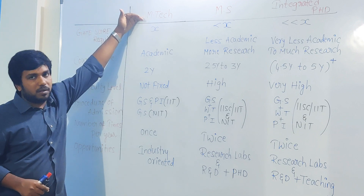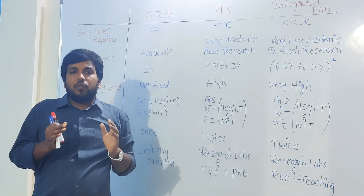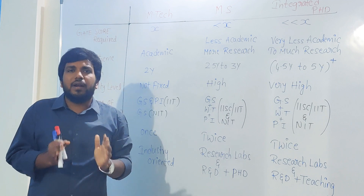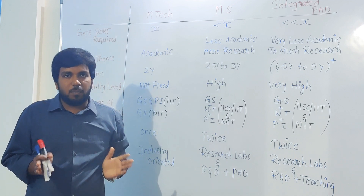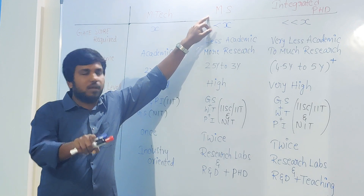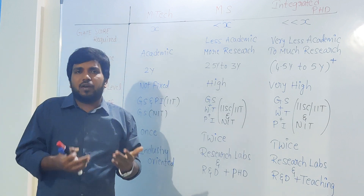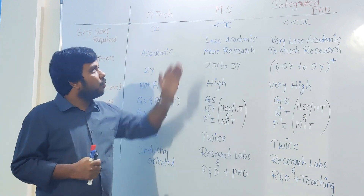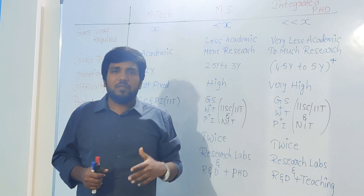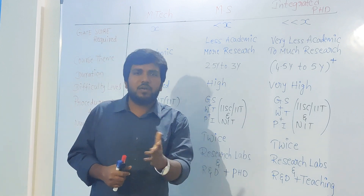Let's take an example: if you want to get production specialization in IIT Madras, you require a GATE score of around 850. But in the same IIT Madras to get production department MS, you need not have 850 — it is sufficient to get a GATE score of 600 to 700 maximum. If you are interested in pursuing integrated PhD, a GATE score of 500 to 600 is sufficient.